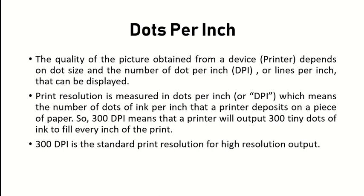The quality of a printer or plotter depends on the number of dots per inch or lines per inch displayed on the paper. Resolution measures how good the printing capability is. DPI means the number of dots of ink per inch that a printer deposits on a piece of paper. A DPI of 300 is considered standard print resolution, meaning there are 300 dots of ink available at every inch of paper.